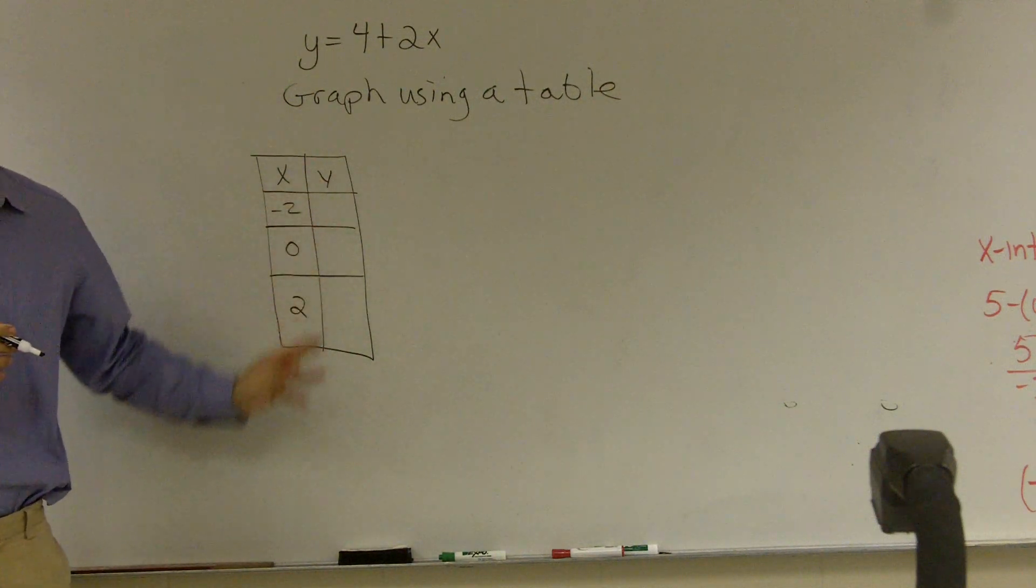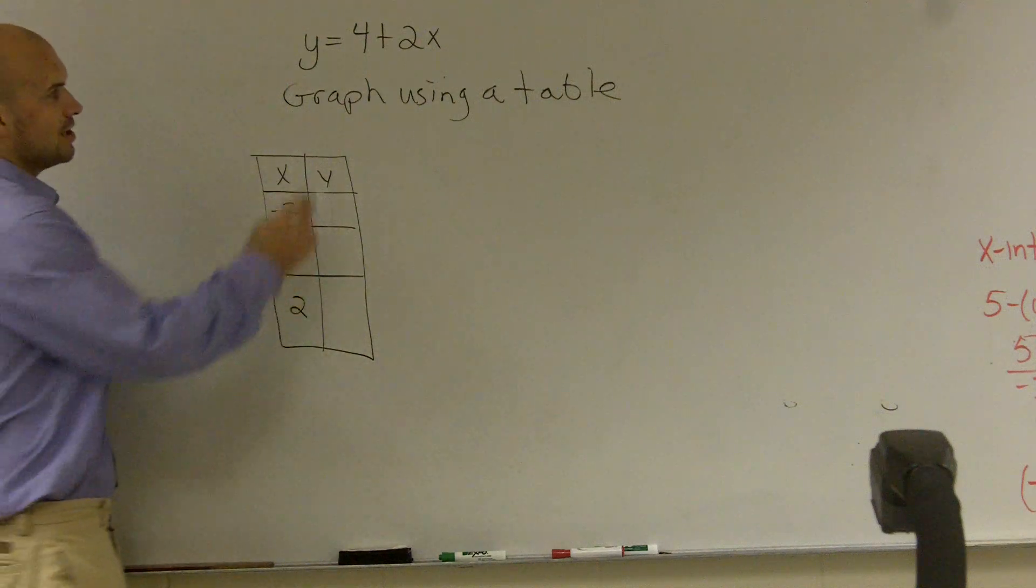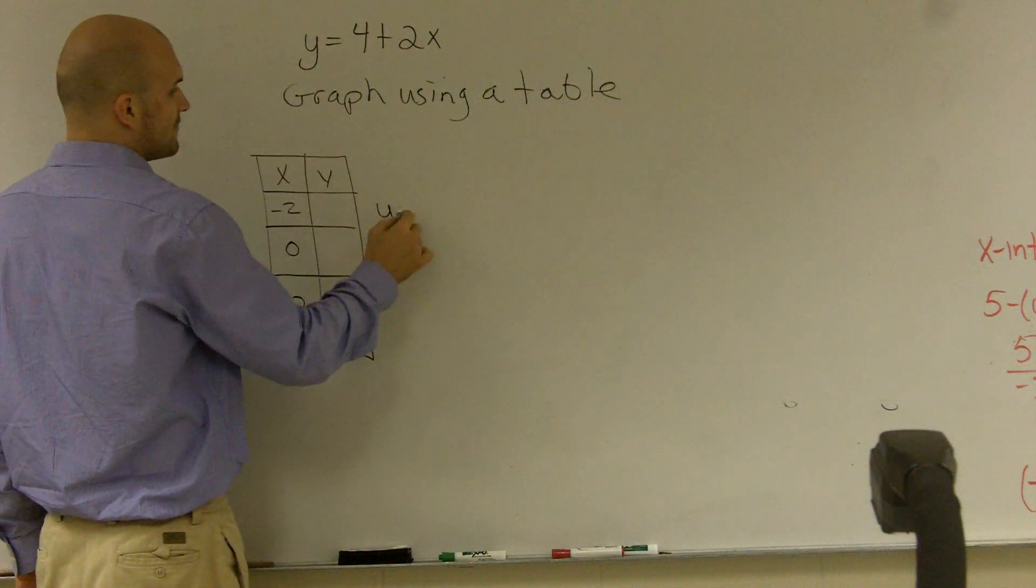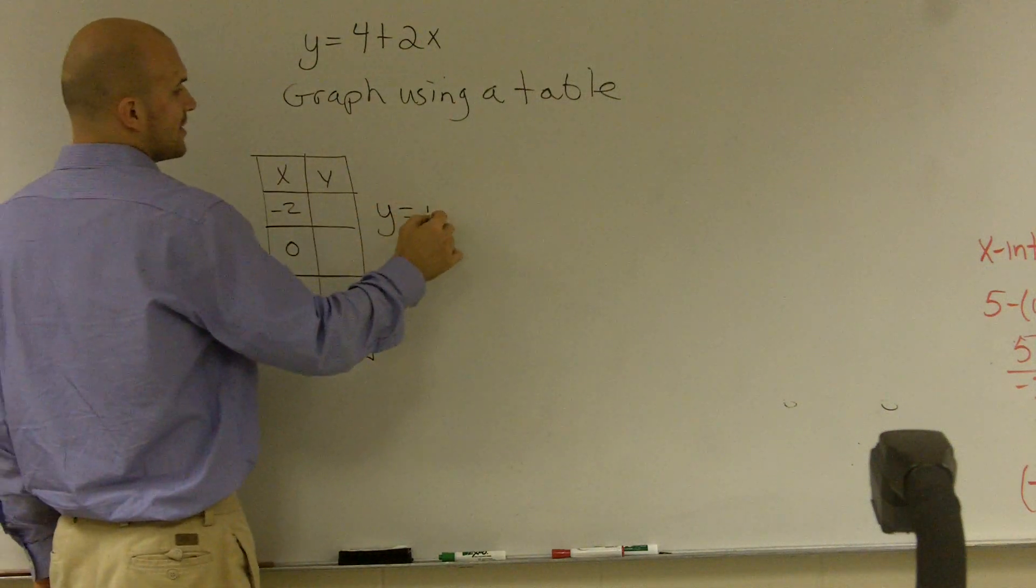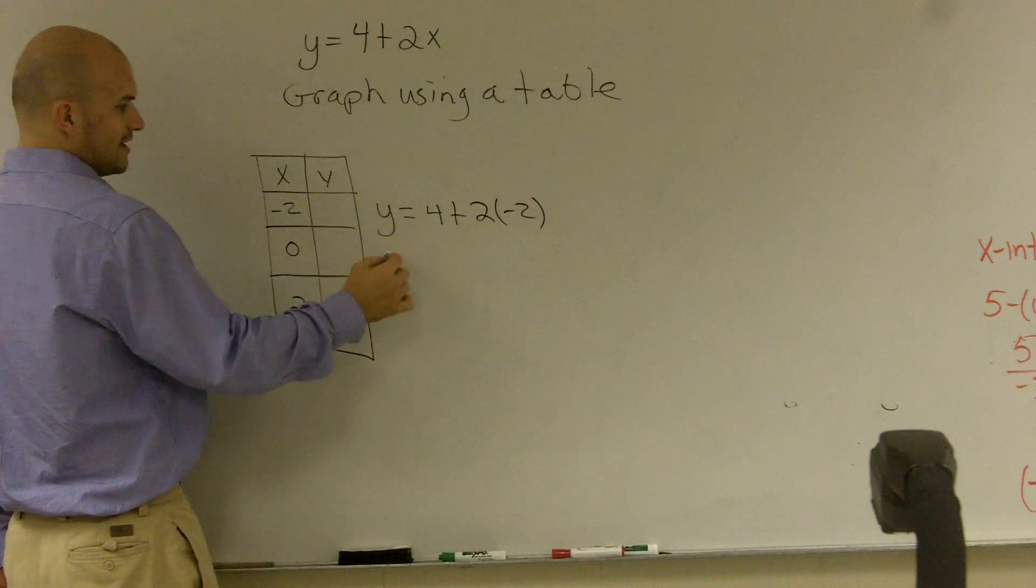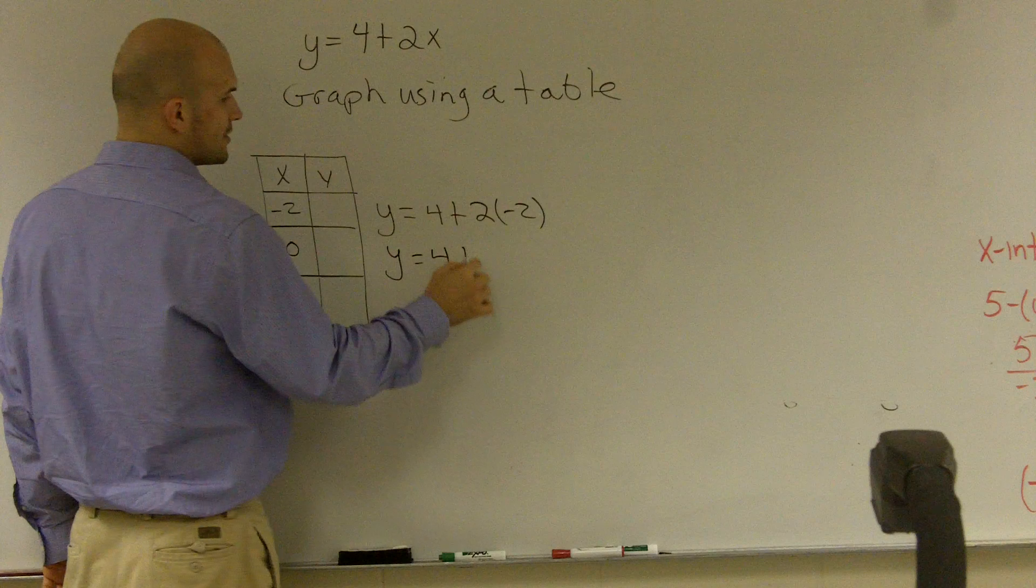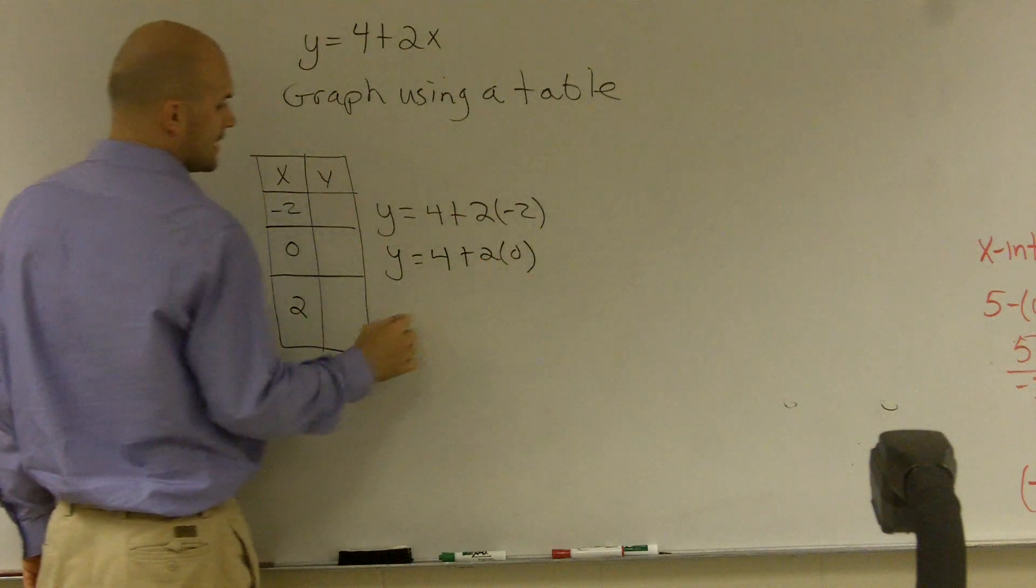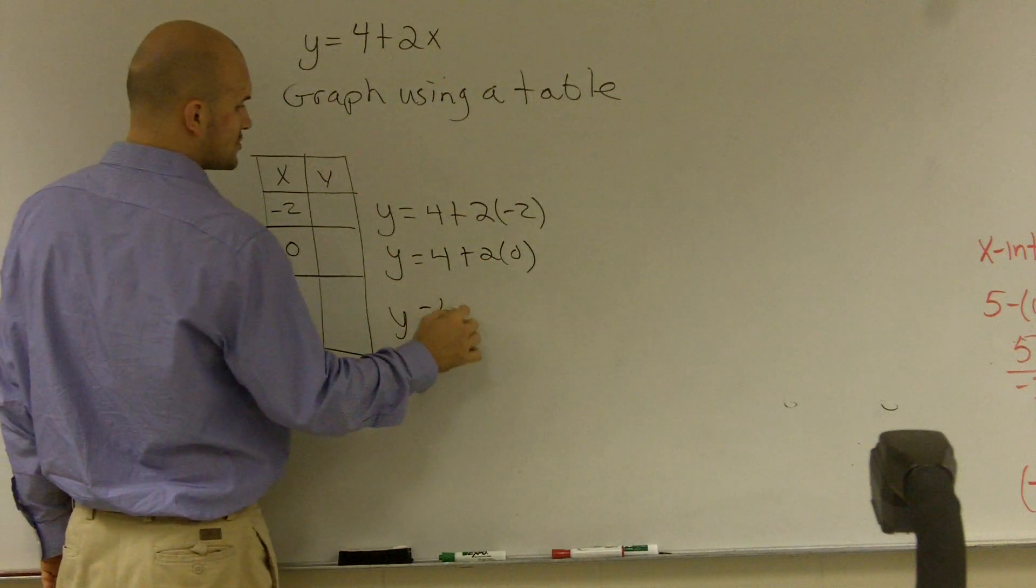Then what we need to do is we need to find out what the y value is. So to do that, I'm going to say, well, I don't know what y is, but I know that my x for this is equal to negative 2. For here, my x is equal to 0. And here, my x is equal to 2.